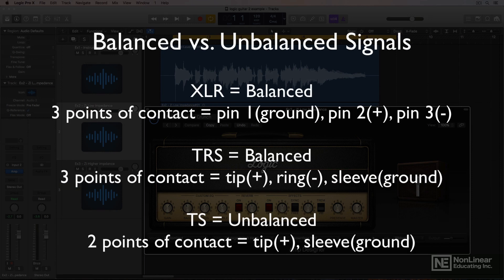This is why XLR has three pins, and TRS has a tip, ring, and a sleeve — so three points of contact. With TS connectors there's just two: a tip and a sleeve. Instrument cables work with unbalanced signals.